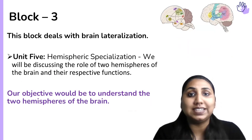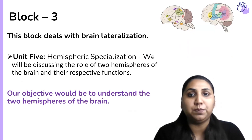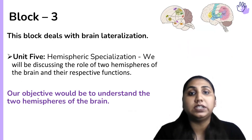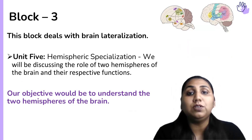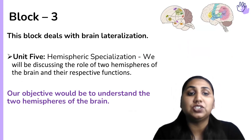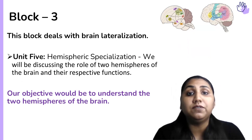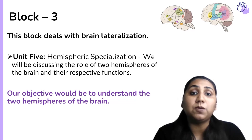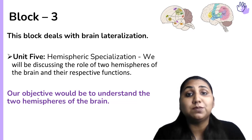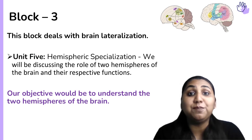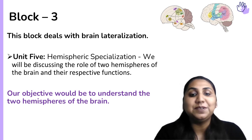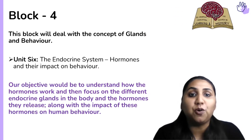In block three our objective is to understand the two hemispheres of the brain. Our brain is centrally divided into the right hemisphere and left hemisphere. In unit five, called hemispheric specialization, we learn which hemisphere is responsible for speech, writing, memory, and language — all these aspects are covered in brain lateralization.